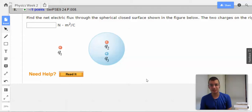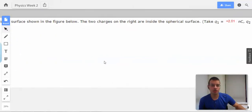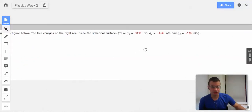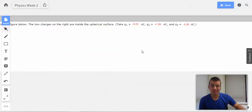So find the net electric flux through the spherical closed surface shown below in the figure. Two charges on the right are inside the spherical surface. OK, that's good. Q1 is this, Q2 is that, and Q3 is this.